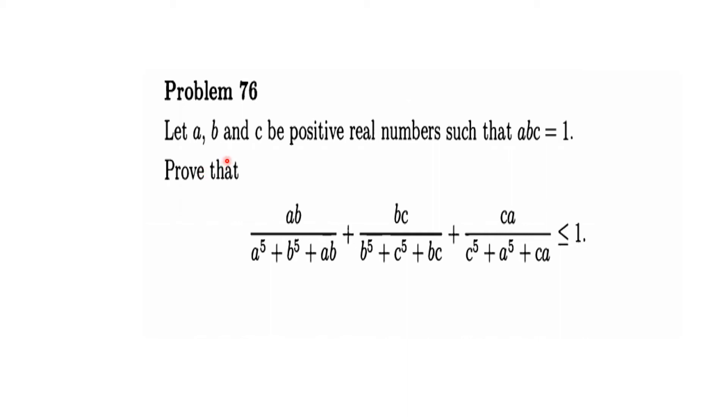We have a problem here where a, b, and c are positive real numbers such that a multiplied by b multiplied by c equals 1. We have to prove that ab divided by a^5 + b^5 + ab, plus...